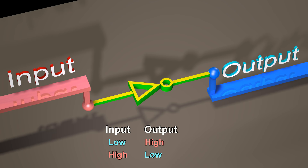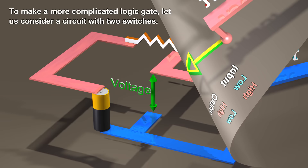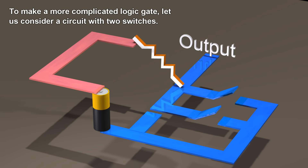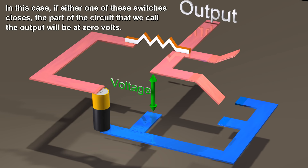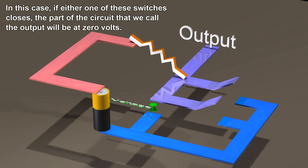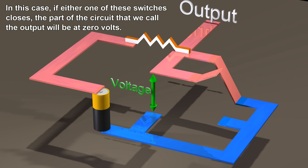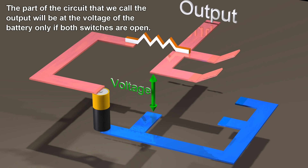To make a more complicated logic gate, let us consider a circuit with two switches. In this case, if either one of these switches closes, the part of the circuit that we call the output will be at zero volts. The output will be at the voltage of the battery only if both switches are open.